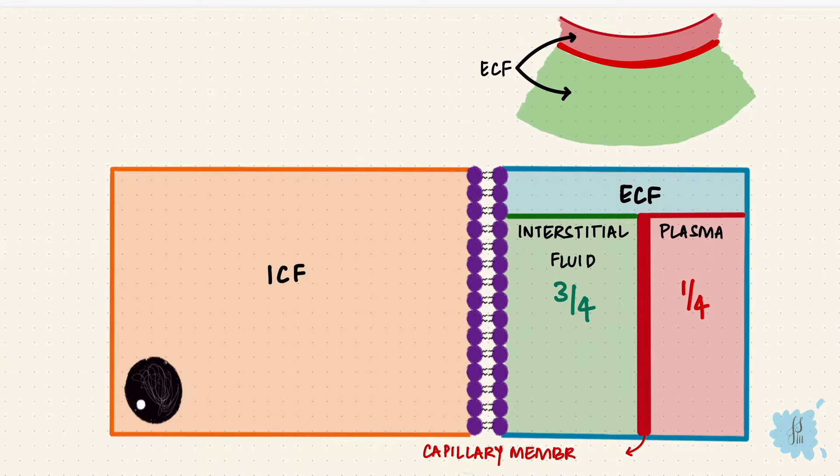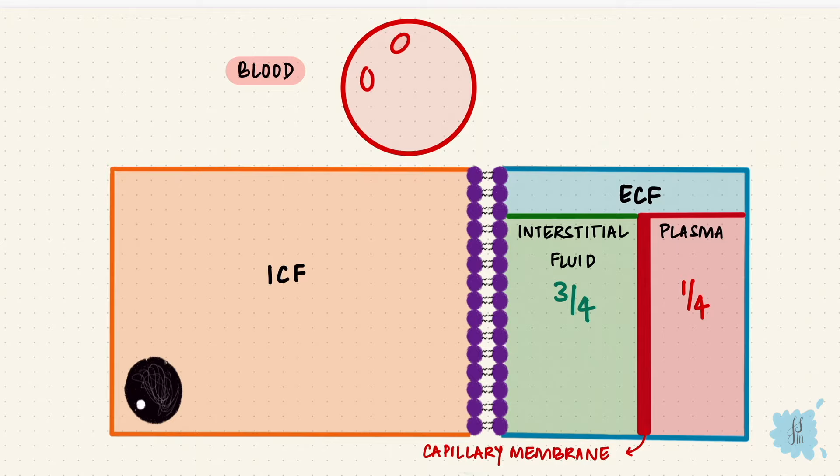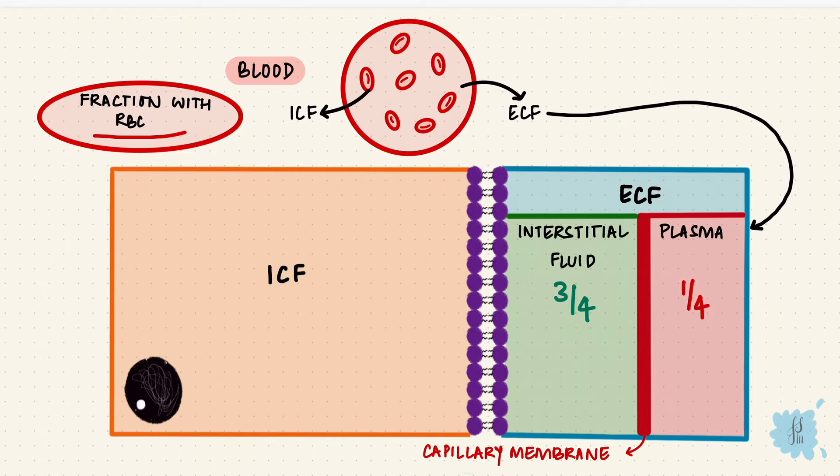Blood can be considered a compartment of its own because it has both an ECF and an ICF — it has plasma and it has cells, like red blood cells. The fluid inside the RBCs is the ICF, and the fluid in the plasma is the ECF. The fraction of blood that's RBCs is called the hematocrit.